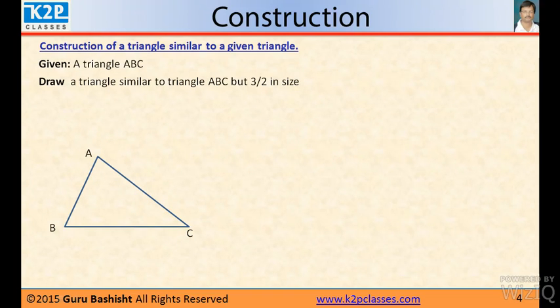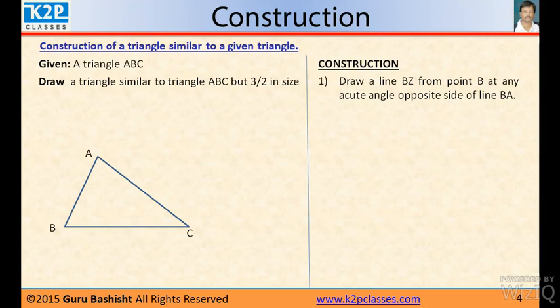Now, construction of a triangle similar to a given triangle. Again, a triangle ABC is given but here the ratio is greater than one. Let it is three by two.